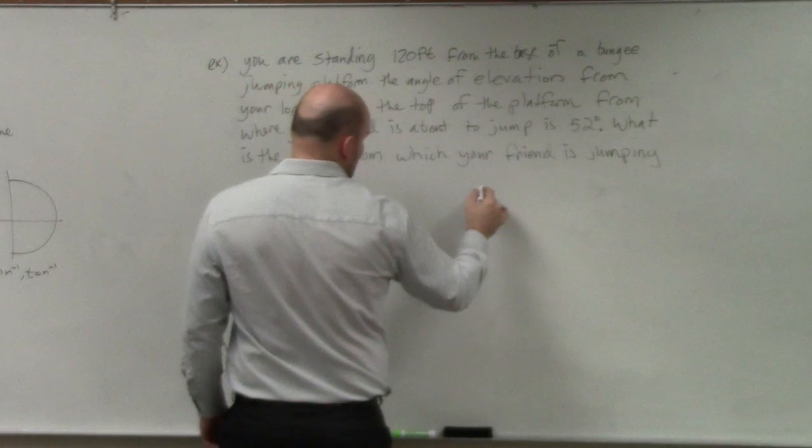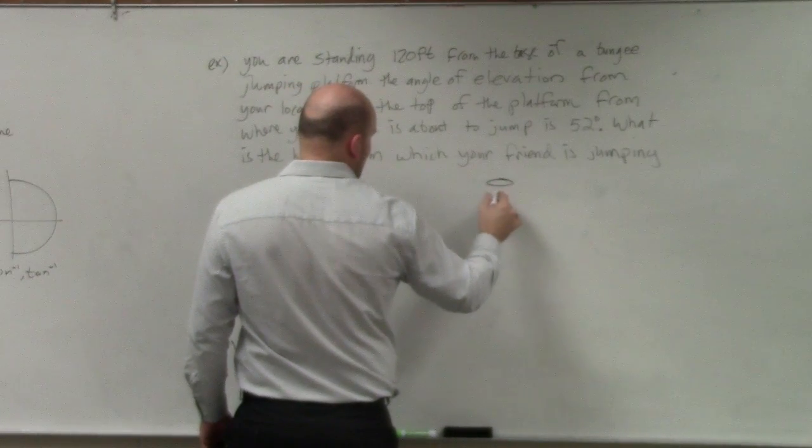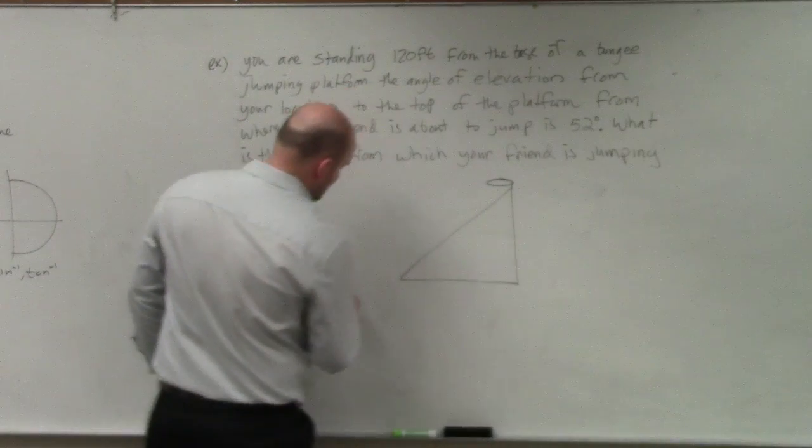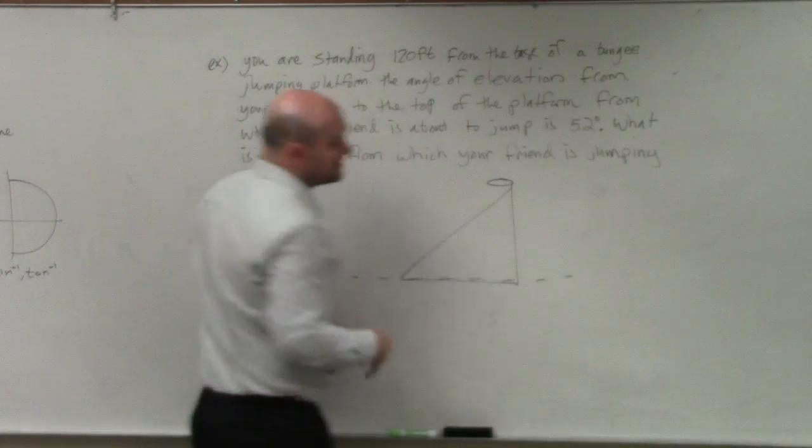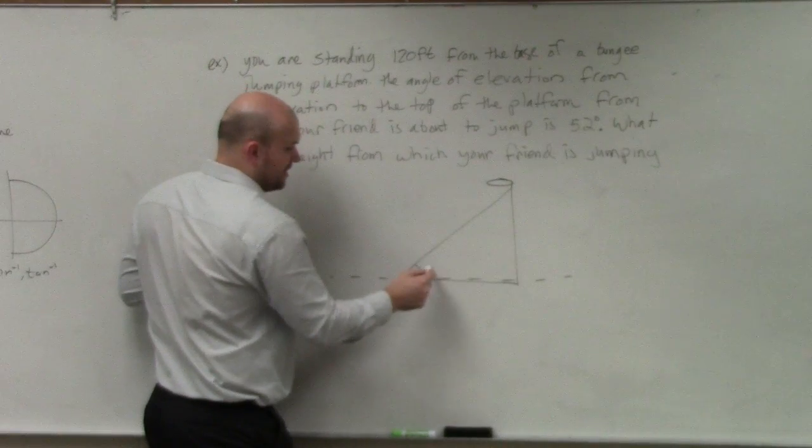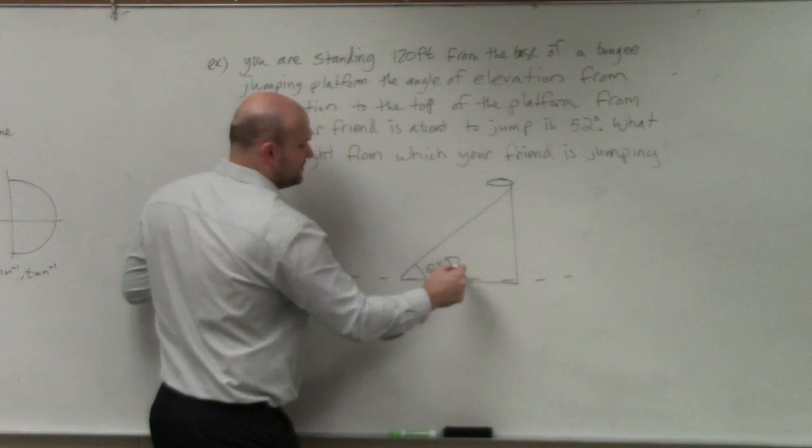So, first thing is, just create a nice little platform. All right, fine. You have an angle of elevation. Angle of elevation is from a horizontal sightline. That could be the ground or so forth, but it's going up, right? We know that is 52 degrees.